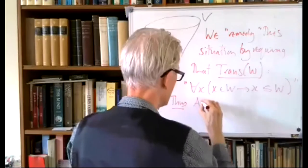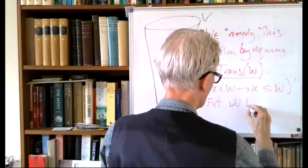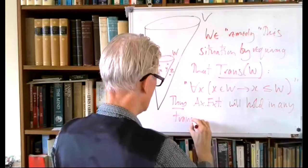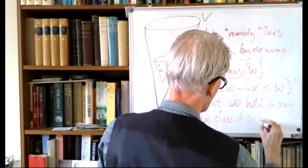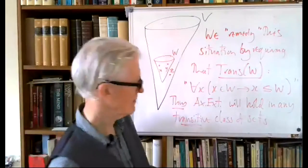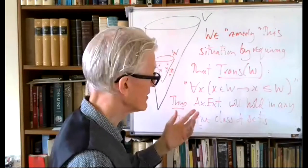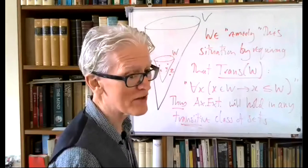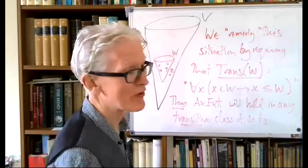The first thing to note is that by transitivity we ensure W is correct about whether sets are equal or not. Thus the axiom of extensionality holds in any transitive class of sets. This is a sufficient but not necessary condition — extensionality holding in W does not imply W is transitive.